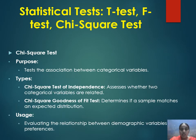The chi-square test is used to test the association between categorical variables. Types include the chi-square test of independence, which assesses whether two categorical variables are related, and the chi-square goodness of fit test, which determines if a sample matches an expected distribution. Its usage includes evaluating the relationship between demographic variables and preferences.